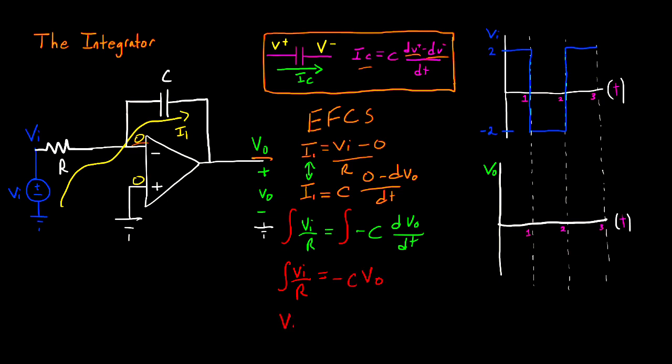So now I can write that VO is equal to 1 over negative RC times the integral of VI DT. Now let's say I set my R value to be equal to 1K, and I set my C value to be equal to 2 millifarads.